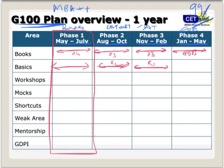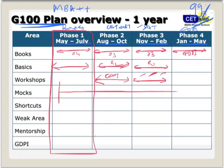Next is a workshop covering all the strategy shortcuts and everything — we'll talk about the workshop in phase 3 for CAT and CMAT, and later for other exams like Symbiosis, NARSEE MONJEE, and XAT. Next, for mocks — no mocks this month. From June 1st, I want you to give one mock a week. There are 100 mocks available online.